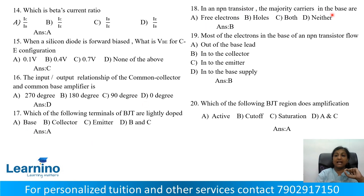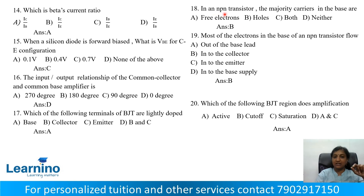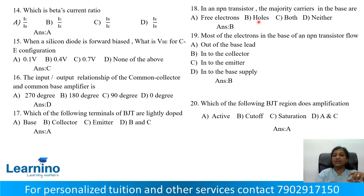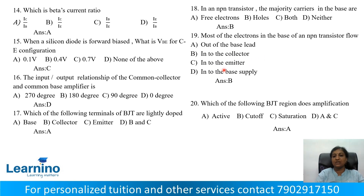In an NPN transistor, in the base region the majority carrier — in a P-type region the majority carrier is holes. Correct answer is Option B: Holes. Question number 19: Most of the electrons in the base of an NPN transistor flow to the collector.